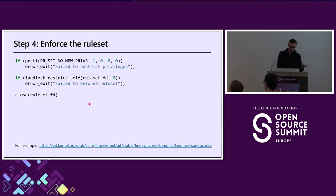Once you've added every exception — defining what your application legitimately needs to access — you call the third syscall, `landlock_restrict_self`, passing the ruleset file descriptor. If it returns without error, the current process is sandboxed.